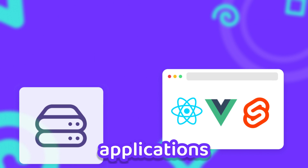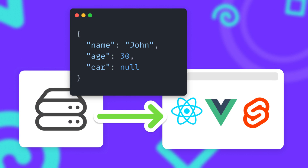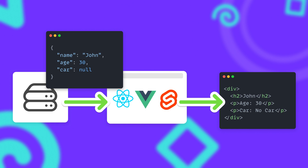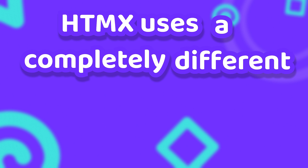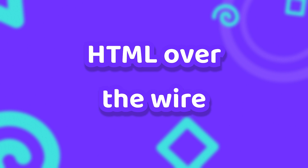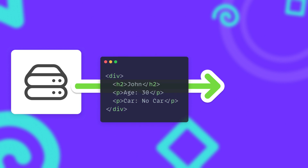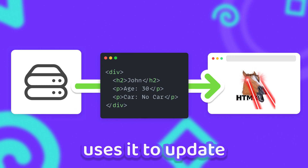Most modern web applications fetch JSON data from a backend server, and the client then uses that structured data to render the HTML. But htmx uses a completely different approach called HTML over the wire — instead of JSON data, the server sends rendered HTML to the client, and the client uses it to update the website.